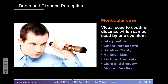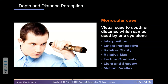Binocular cues are about perceiving how far away something is — which is what depth perception is about — based upon cues in the environment. Monocular cues are not about both eyes but about the use of one eye: visual cues to depth or distance that can be used by one eye alone. Even if you only had one eye, you could still accomplish the depth-perception tasks listed.